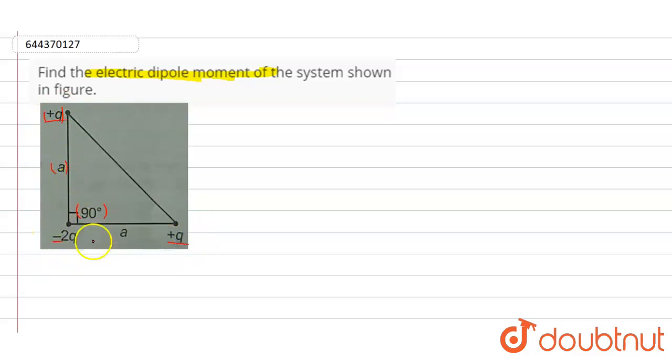So the hypotenuse value will become √2a. This is the hypotenuse value I am considering. Let us suppose this is the direction of p2.